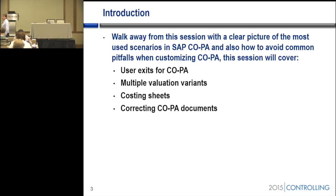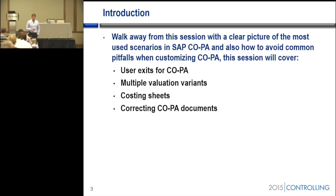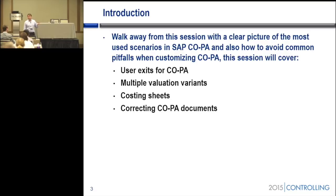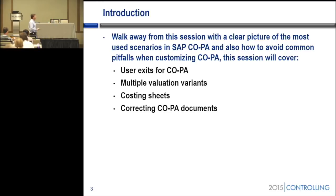The proposal for today: I want to go through some user exits that we use in COPA that help for derivation when you have characteristic derivation, and also valuation for the value fields. The costing sheet — I don't know if you're using costing sheets for planning or also for actuals, for example to bring overhead costs to COPA and to do some kind of accrual. We will also see how to correct or fix some issues in COPA documents, because we always say we cannot fix COPA — but we can. We can reverse, we can delete documents, we can do a lot of things with COPA. So let's go.